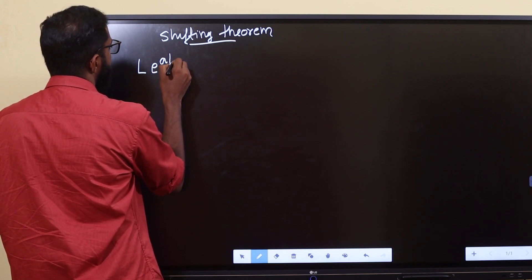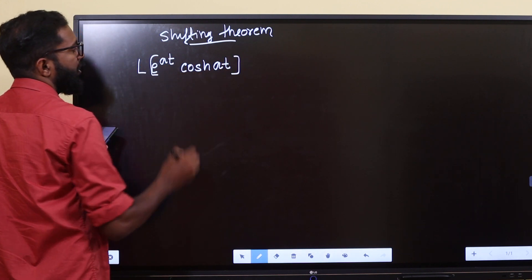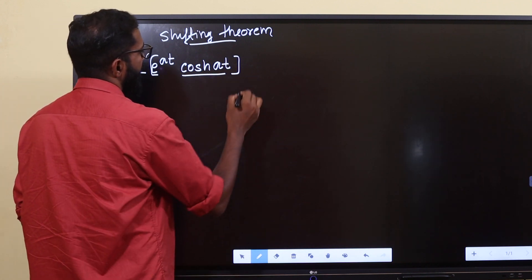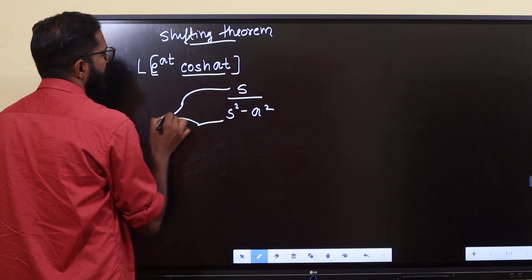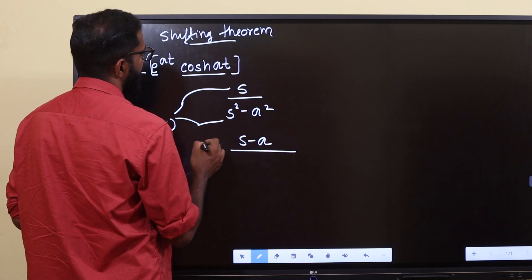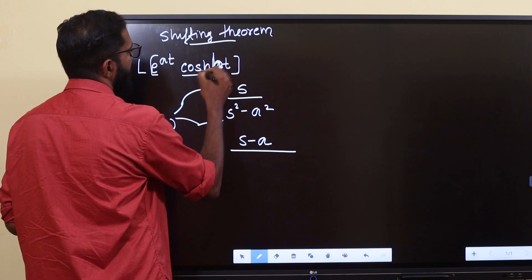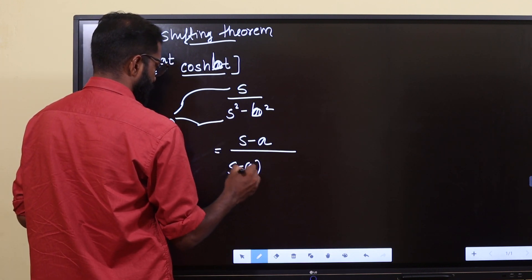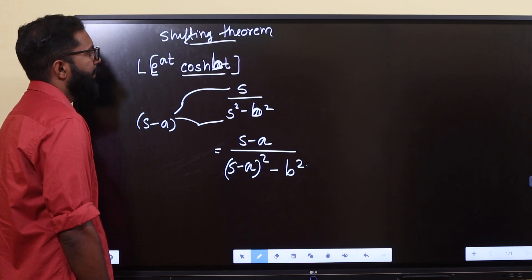Let's write Laplace of cosh bt. Cosh bt equals s divided by s squared minus b squared. Using the shifting theorem, L{e^(at) cosh bt} equals s minus a divided by s minus a whole squared minus b squared.